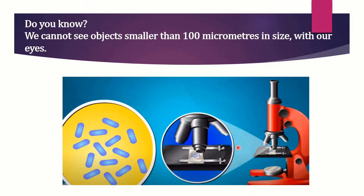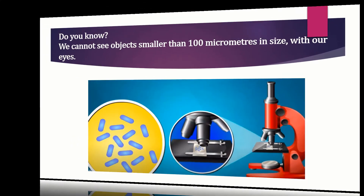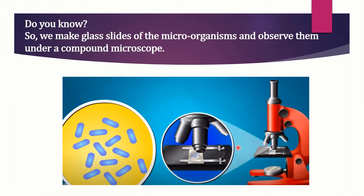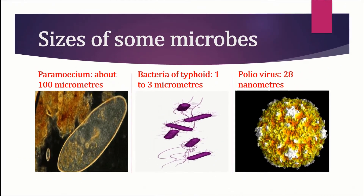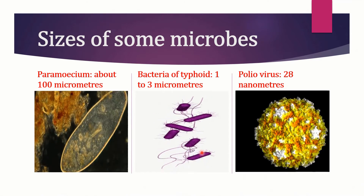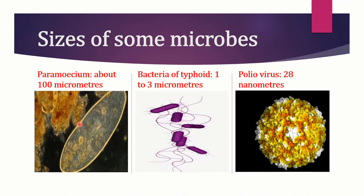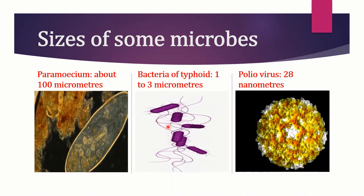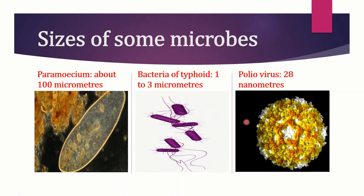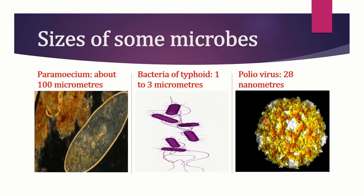We cannot see objects smaller than 100 micrometers in size with our eyes. So we make glass slides of the microorganisms and observe them under a compound microscope. Here are the sizes of some microbes: paramecium is about 100 micrometers, bacteria of typhoid is 1 to 3 micrometers, and polio virus is about 28 nanometers.